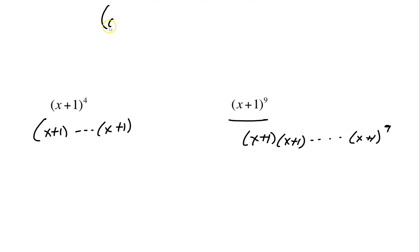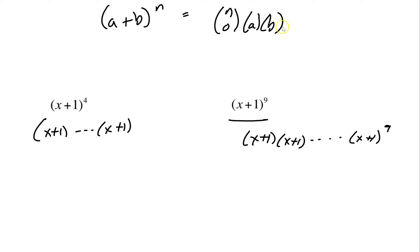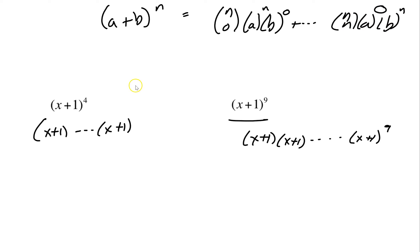So the binomial theorem simply states: if you have a binomial to the n power, you expand it using terms from n-choose-0 through n-choose-n, with each term including powers of the first and second terms. A lot of this doesn't make sense right now, so we need to break it down. First, let's talk about what that notation means.